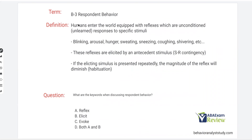We're going to start with respondent behavior. Respondent behavior will be perhaps a small portion of your exam, and in practice we don't deal with it all that much, but it's extremely important as it relates to operant conditioning. Respondent behaviors are essentially reflexes that are unconditioned. We enter the world equipped with reflexes to specific stimuli — we blink, get aroused, get hungry, sweat, sneeze, cough, shiver. Most of these are evolutionary traits that help us survive. They're unconditioned reflexes.